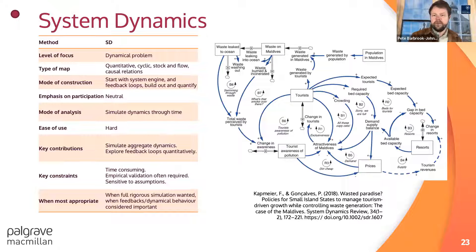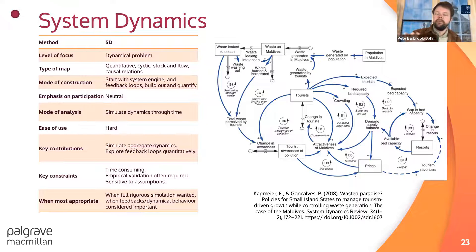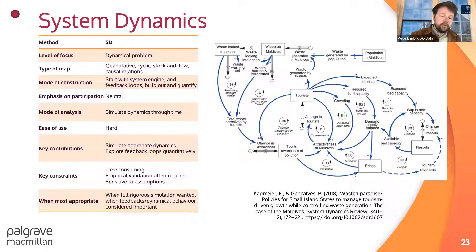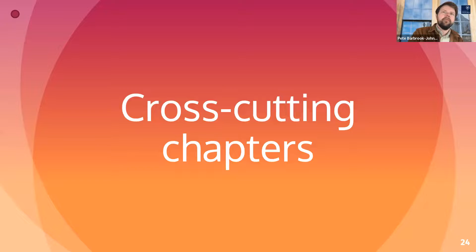System dynamics is a full simulation methodology — sometimes building out from causal loop diagrams but not always. Here we fully specify a model with equations for all the relationships, allowing us to simulate the behaviour of the system through time. This can allow empirical validation, forecasts, and extrapolation. The cost is that this is more time-consuming and more technically demanding than most other methods, requiring significant technical skill and craft — which can be a constraint for people who haven't developed that expertise.